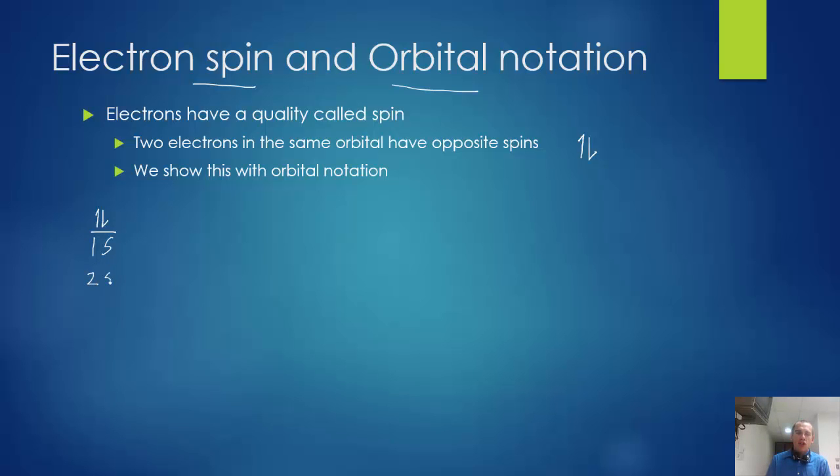So then we go to the second energy level which is 2s. So our 2s is down here and the 2s also has, it's an s orbital so it's got two spots and then we go to the 2p.